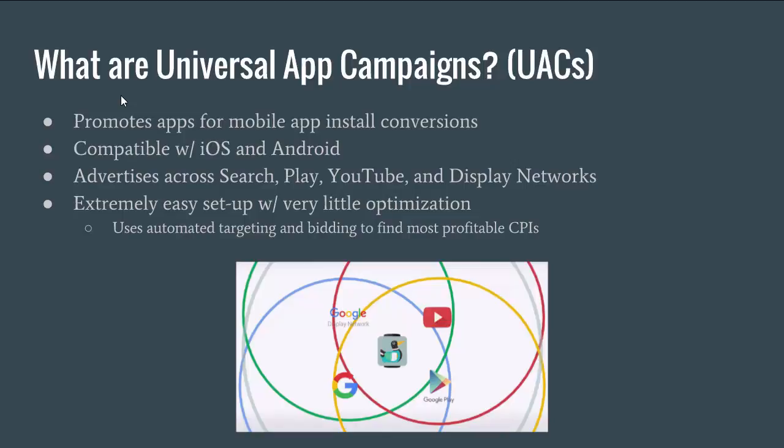So what are universal app campaigns? We abbreviate them in AdWords as UACs. A universal app campaign promotes your mobile app — what UACs are built to do is promote your mobile app and get people to install it. They use mobile app installs as the conversion, trying to get as many people to download your app as possible for as cheap as possible. They are compatible with both iOS and Android, and if you set it up correctly you can advertise on both of those platforms.